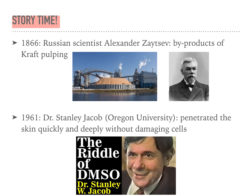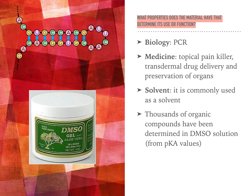In 1961, Dr. Stanley Jacob from Oregon University discovered that DMSO could penetrate the skin quickly and deeply without damaging cells. In biology, DMSO is commonly used in PCR, or polymerase chain reaction, to inhibit secondary structures such as the hairpin pattern in the DNA.